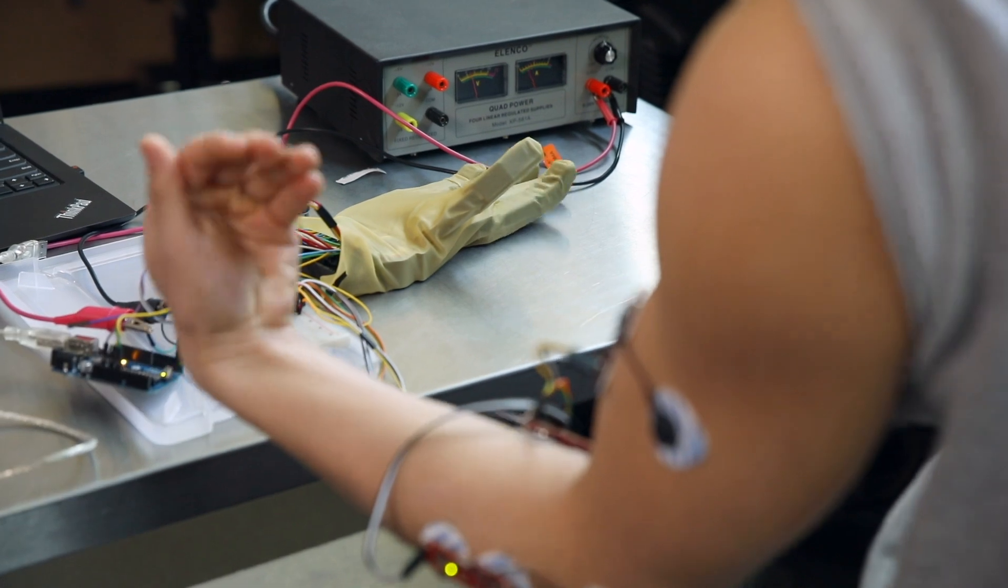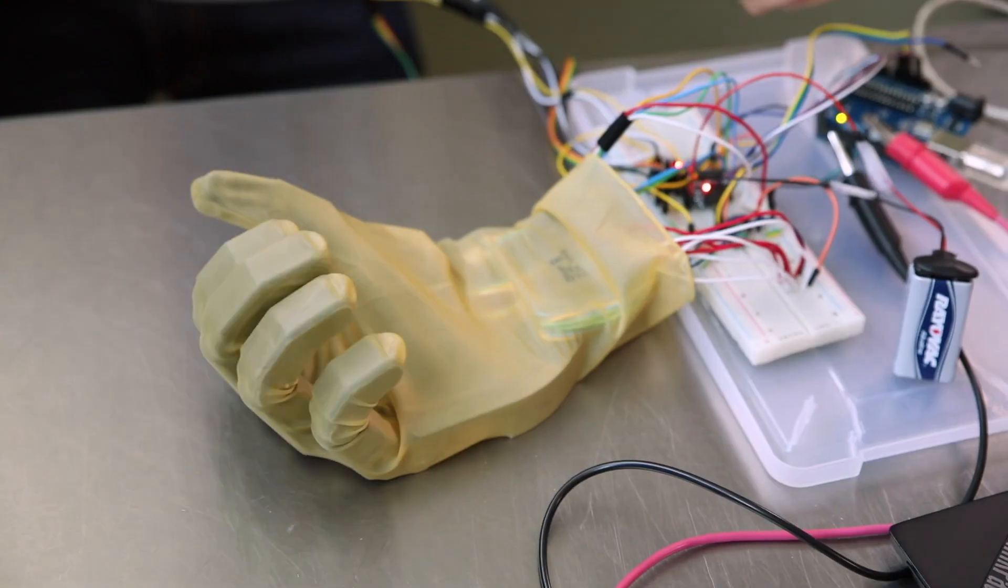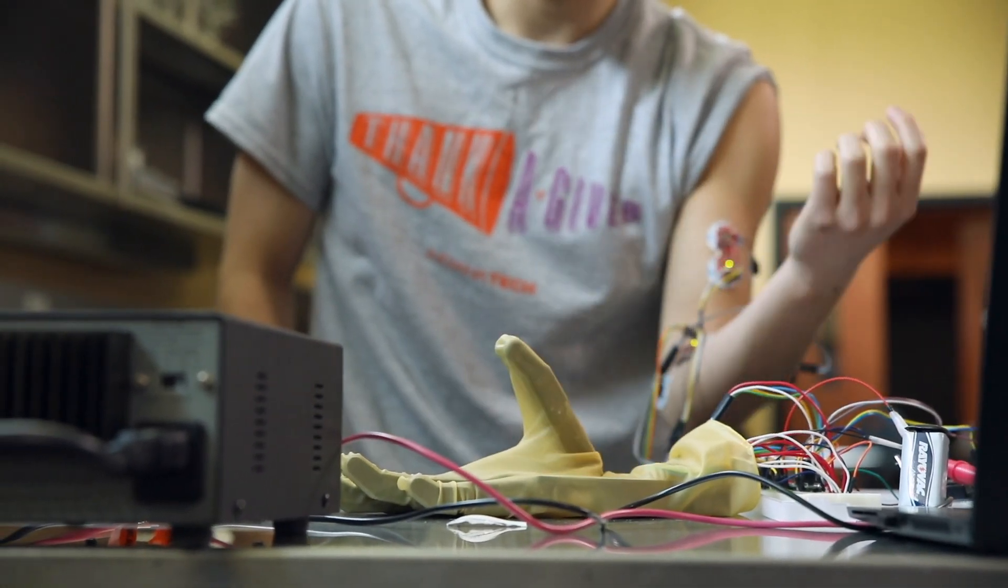The palmaris longus controls the flexion of the fingers, the extensor digitorum controls the extension of the fingers, and I'm using the bicep as a toggle switch to control the thumb.